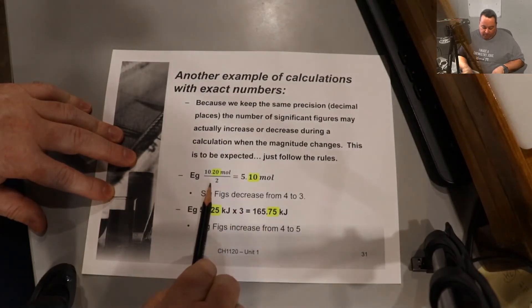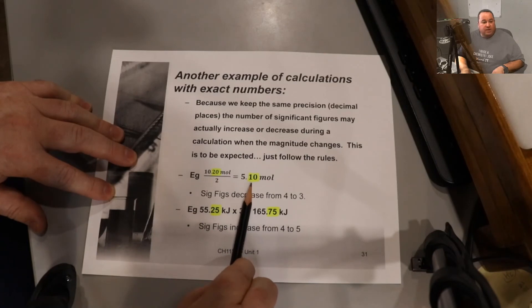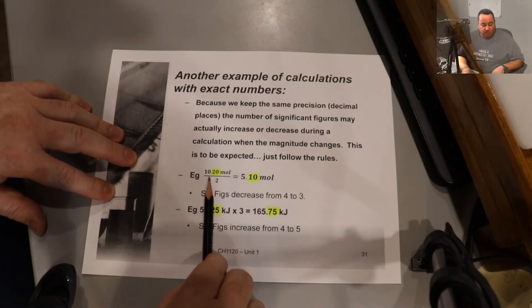For example, if I were to take 10.20 moles and divide by exactly two, I would output my answer 5.10 moles, keeping the same precision two places after the decimal. Now, the sig figs decrease from 4 to 3, but that's exactly what should happen in this case.